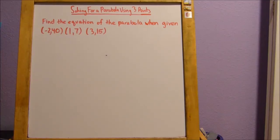Okay, today we're going to learn how to solve for a parabola using three points. So in this example problem, we're going to find the equation of the parabola when given (-2, 40), (1, 7), and (3, 15).